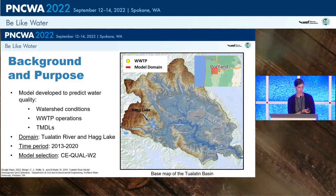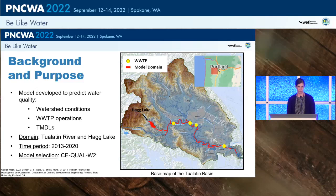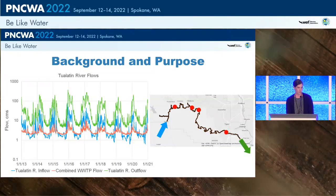For this project, the model domain is the Tualatin River and Hag Lake, shown in red on the map. Of particular interest are the four wastewater treatment plants operated by Clean Water Services. The time period for this model is 2013 through 2020 — a continuous model simulation through that period, with model outputs predicted every hour, giving us hourly predictions for those eight years. The model selected was CE-QUAL-W2.